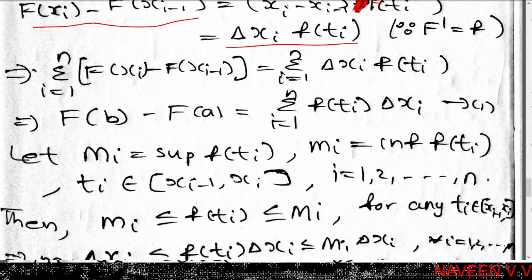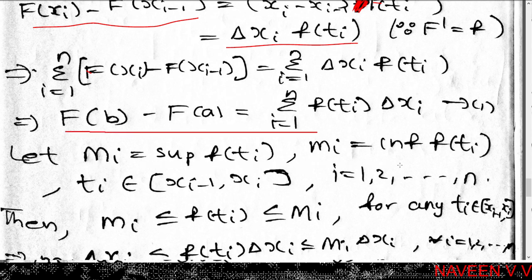Summing over i = 1 to n: Σ[F(x_i) - F(x_{i-1})] = Σ f(t_i)·Δx_i. The left side is a telescoping sum equal to F(x_n) - F(x₀) = F(b) - F(a). So F(b) - F(a) = Σᵢ f(t_i)·Δx_i.